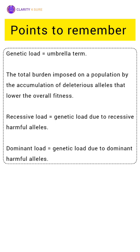Then we have dominant load. This is the fraction of genetic load due to dominant harmful alleles. The example is Huntington's disease in humans. It's usually rare in natural populations because natural selection eliminates them quickly, since they express in both heterozygous and homozygous conditions.